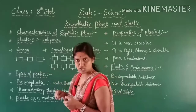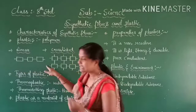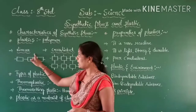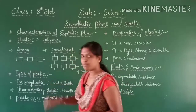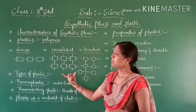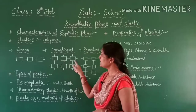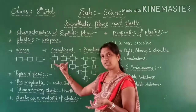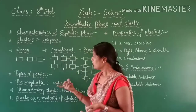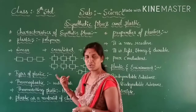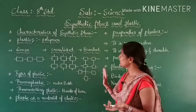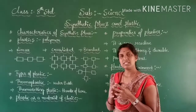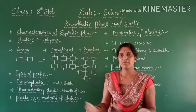The first type is linear arrangement — the monomers are arranged in a straight line manner to form a long chain polymer. The second type is cross-linked arrangement, where the monomer units are linked in all directions, not only in linear form. The third type is branched arrangement, where the monomer units are arranged in the form of branches — from one chain, again we can see two branches.